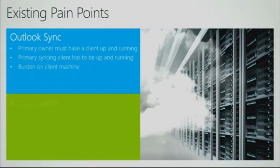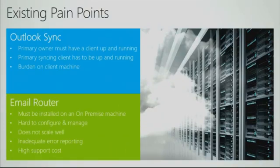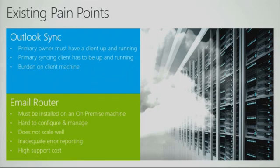The pain points of Outlook sync include that the primary sync client must be up and running, placing a burden on the client machine — Outlook has to be up, running, and handling the throughput of sending or receiving emails. The pain points of the email router include that it must be installed on an on-premise machine, it's hard to configure and manage, it does not scale well, there's inadequate error reporting, and ultimately a high support cost in maintaining that additional hardware and technology to keep emails flowing.